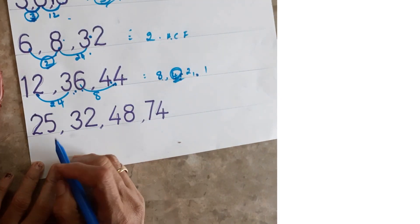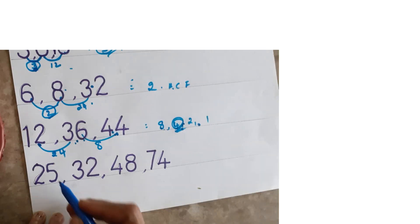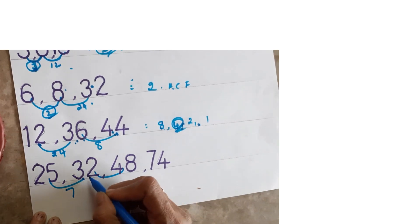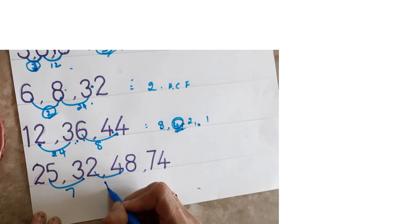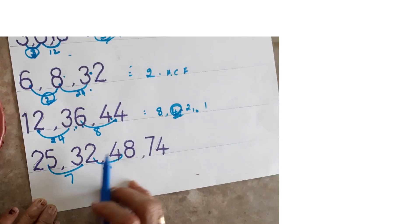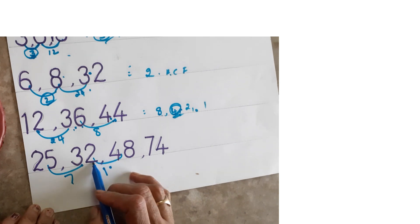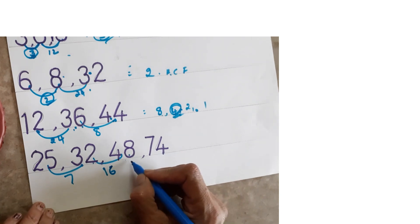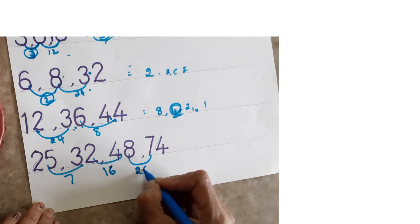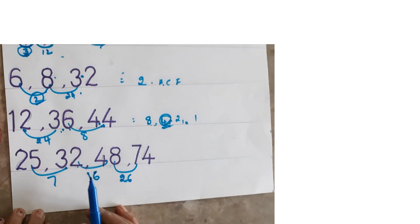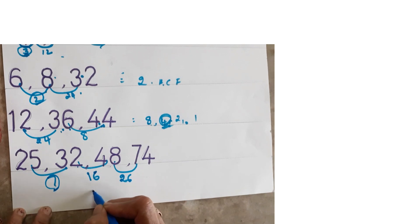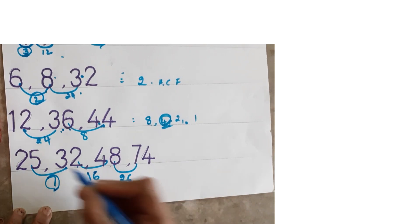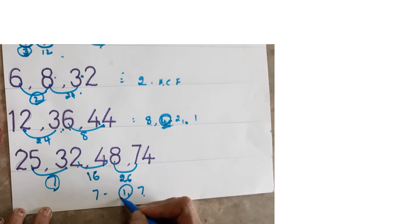One more sum: 25, 32, 48, and 74. Find the differences: 32 minus 25 is 7, 48 minus 32 is 16, 74 minus 48 is 26. The smallest difference is 7. Factors of 7 are 1 and 7. But 7 does not go into 25 exactly, so the only remaining factor is 1. Therefore HCF is 1.